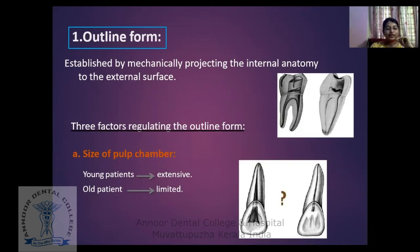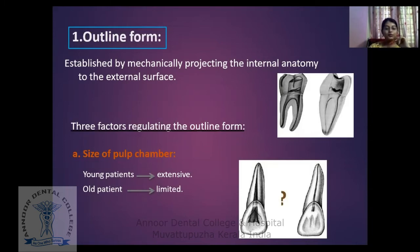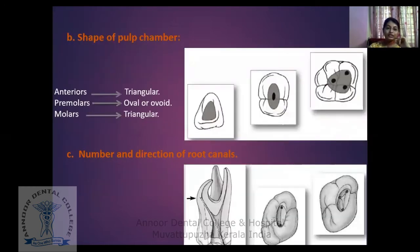There are mainly three factors that regulate the outline form. The first is the size of the pulp chamber, which is not similar in all cases. In younger patients the pulp is more extensive, whereas in older patients the pulp space is very limited with more chances of calcification, making the pulp space narrow. The second is the shape of the pulp chamber, which also differs depending on the tooth.